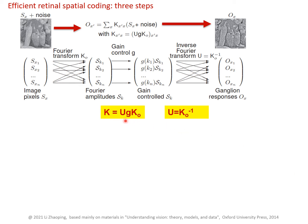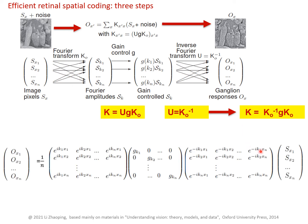Now if we take a general G with U as the inverse Fourier transform, this K matrix takes this composed form: transforming the original image to the output. It is composed of the Fourier transform matrix, the gain control diagonal matrix with each gain for each Fourier component, and the inverse Fourier transform matrix — which is the conjugate transpose of the Fourier matrix since the Fourier transform is unitary.